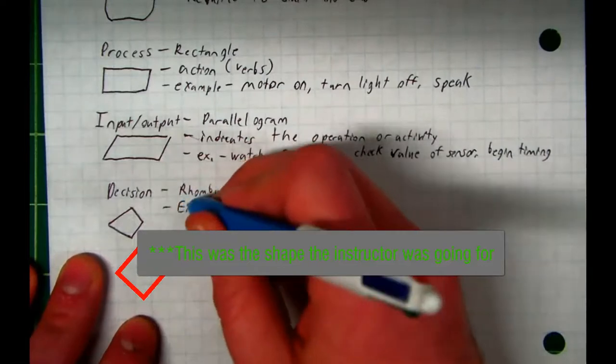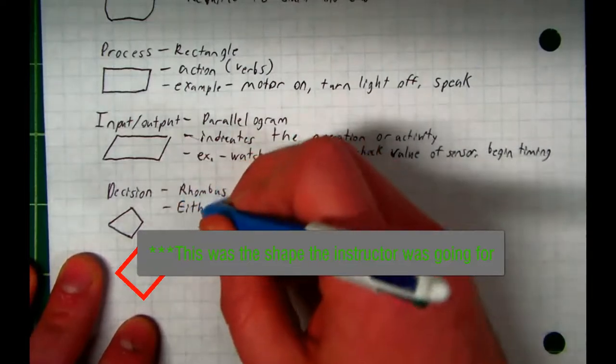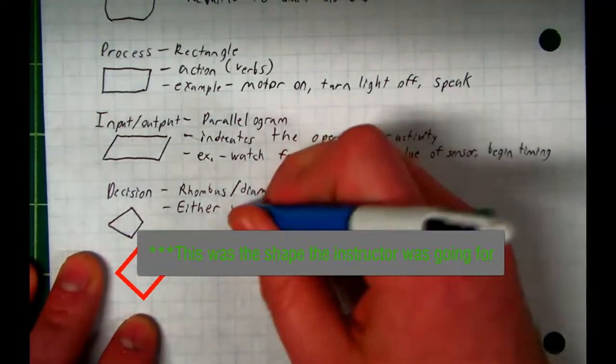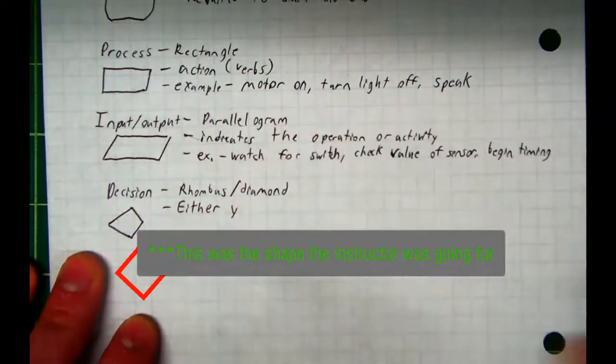It's either yes or no, on or off, true or false. We call this Boolean logic. We'll talk about that more in detail in our conditional statements lesson later in the week.